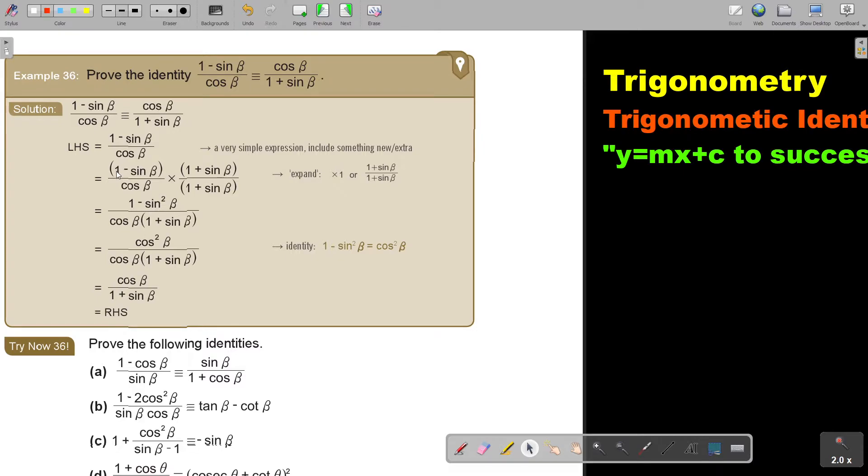So I see that this is 1 minus sin beta. Maybe I can try to form a difference of two squares by multiplying it with 1 plus sin beta. So there's the difference of two squares then.